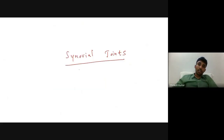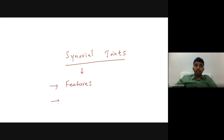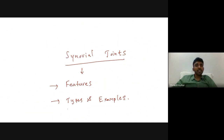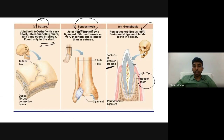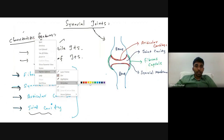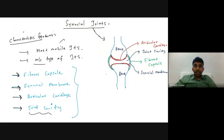Regarding the synovial joints, we will be discussing the characteristic features, the various types and examples of synovial joints, and the various movements occurring at the various synovial joints.